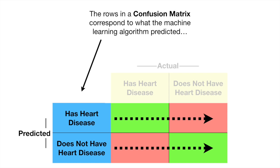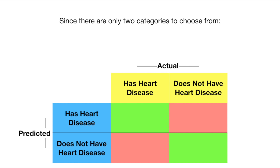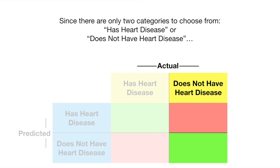The rows in a confusion matrix correspond to what the machine learning algorithm predicted, and the columns correspond to the known truth. Since there are only two categories to choose from, heart disease or does not have heart disease.